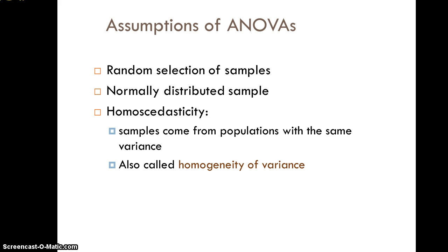The assumptions of analysis of variance: the first is random selection of samples, the same as in the t-test, which impacts our ability to generalize to populations of interest. Random selection doesn't always happen, but it helps with generalizability. The second is normally distributed samples — going back to the central limit theorem, with a sample size of 30 or greater, we can assume normality. The third assumption is homoscedasticity, which is a new one.